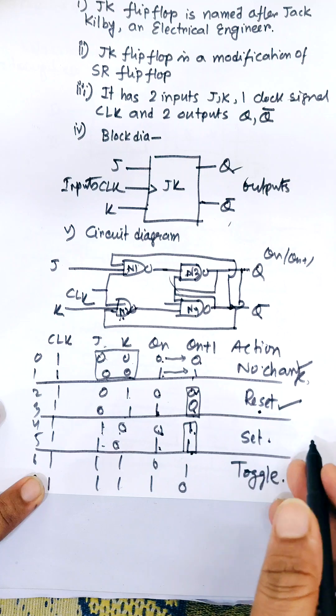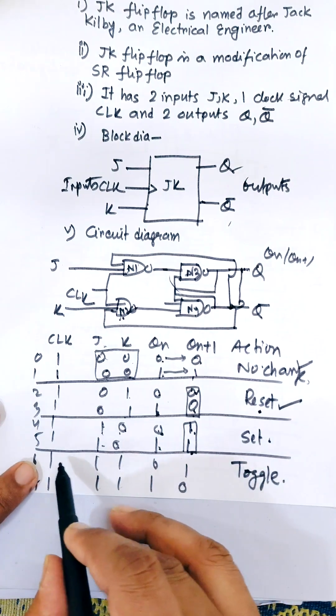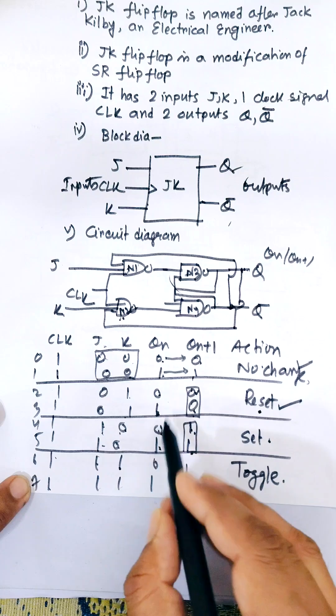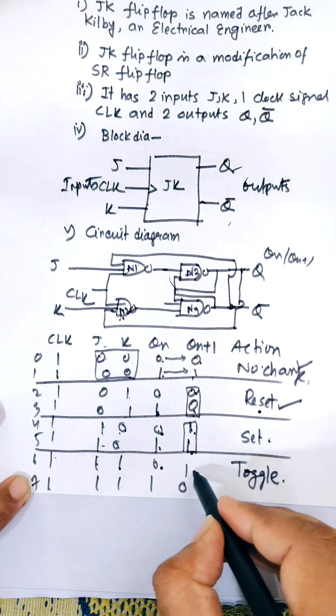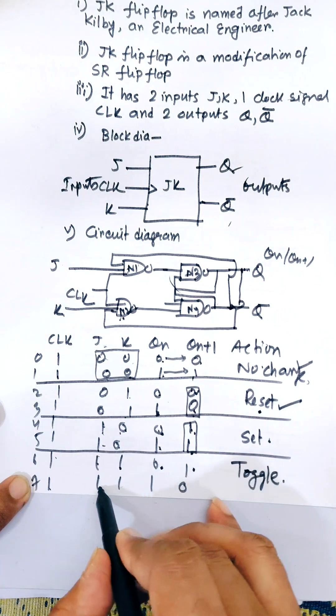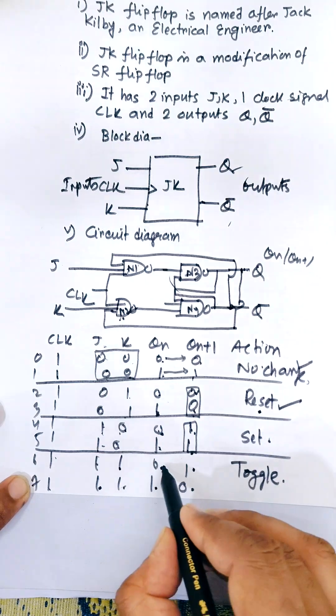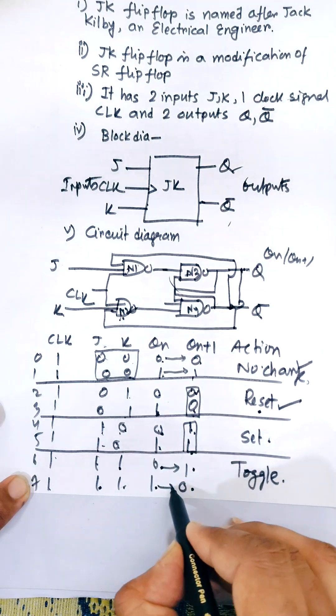Now when CLK is 1, J equals 1, K equals 1, QN equals 0, QN+1 will be 1. And J equals 1, K equals 1, QN is 1, QN+1 will be 0. So 0 is converted to 1 and 1 is converted to 0. That means toggle.